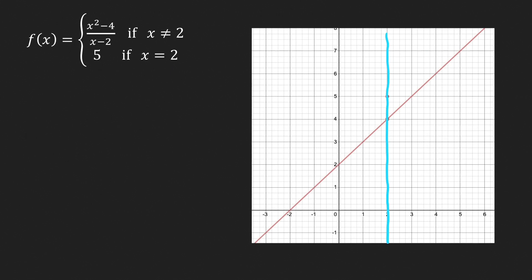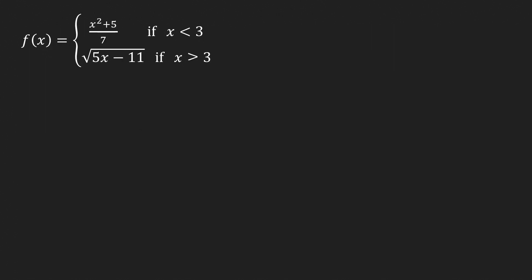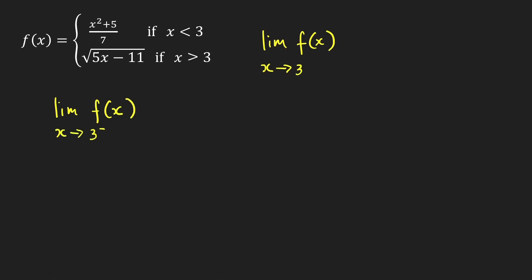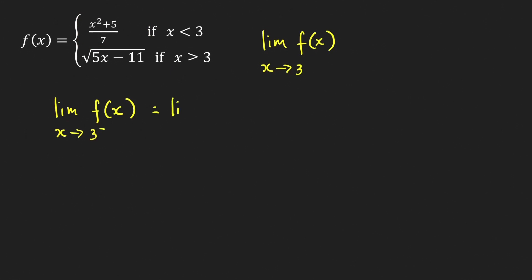Next problem: f of x equals (x² + 5)/7 if x < 3, and equals √(5x − 11) if x > 3. We want to find the limit of f of x as x approaches 3. Since there are two formulas defined on the left and right of 3, we compute one-sided limits first. The left-hand limit uses (x² + 5)/7, so we evaluate the limit as x approaches 3 from the left.